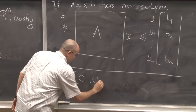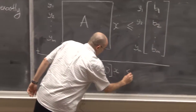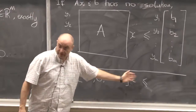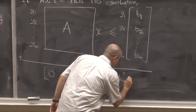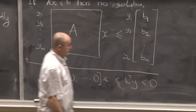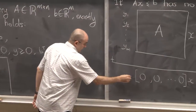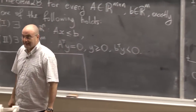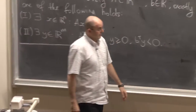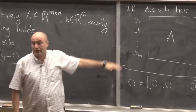The left-hand side becomes zero, zero, ..., zero times X — a linear function. Since I multiplied both sides by non-negative coefficients and kept the inequalities in the same direction, the right-hand side gives B-transpose Y, which is the sum of B_i Y_i. Since the system is unsolvable, the theorem tells me B-transpose Y is strictly less than zero for that choice of Y. But on the left-hand side, the inner product of X with the zero vector is zero regardless of X — an obvious contradiction. That's how these Y's illustrate unsolvability.